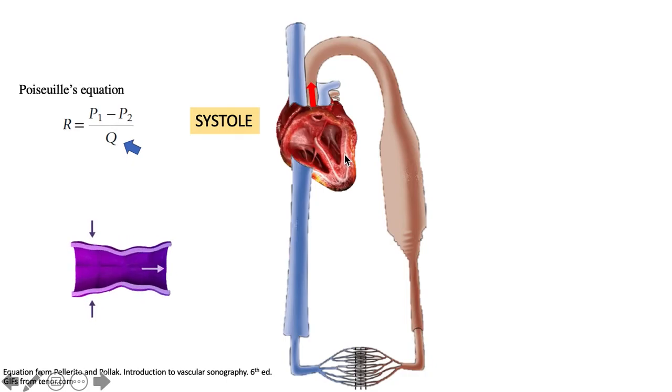This additional volume pushed into the blood vessels would create this pressure gradient. This pressure gradient between the heart and the arteries would create flow.